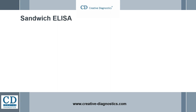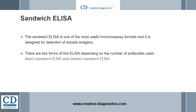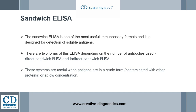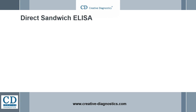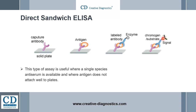Sandwich ELISA. The sandwich ELISA is one of the most useful immunoassay formats, and it is designed for detection of soluble antigens. There are two forms — direct sandwich ELISA and indirect sandwich ELISA — depending on the number of antibodies used. These systems are useful when antigens are in a crude form, contaminated with other proteins, or at low concentration. For direct sandwich ELISA, a capture antibody is attached on the solid phase. After washing away excess unbound antibody, antigen is added and specifically captured. The antigen is then detected by a second enzyme-labeled antibody directly against the antigen. This type of assay is useful where a single species antiserum is available and where antigen does not attach well to plates.